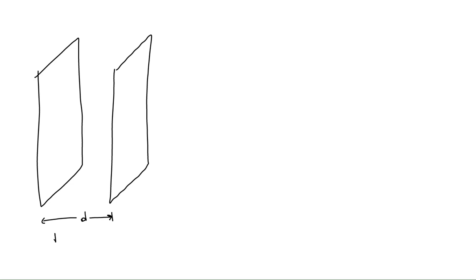Let's begin our solution with a sketch of the capacitor. This is a parallel plate capacitor, which means there are two solid conductors that are parallel planes of charge. This capacitor is uncharged and currently has no charge on it, but we know the plates are separated by a distance D equal to 1.00 times 10 to the minus 3 meters, and each plate has an area A equal to 2.00 times 10 to the minus 4 meters squared.